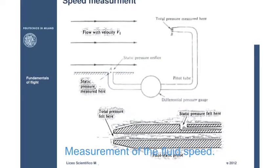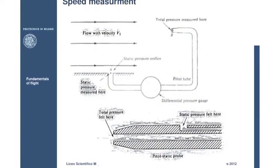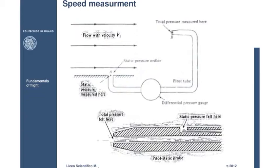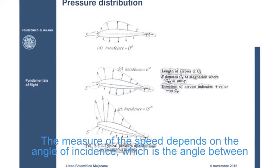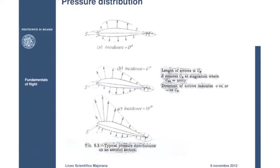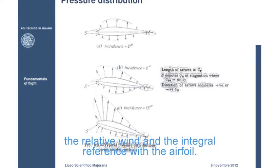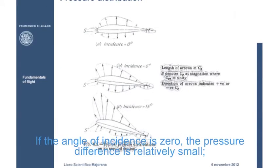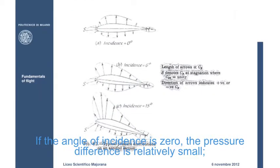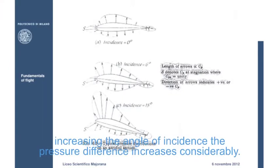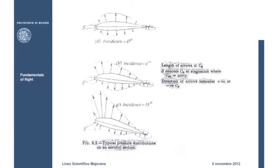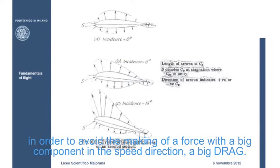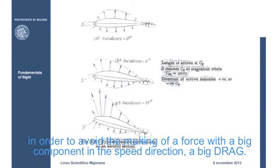Measures of the fluid's speed. The measure of the speed depends on the angle of incidence, which is the angle between the relative wind and the integral reference with the airfoil. The cord is a segment that joins the leading edge with the trailing edge. If the angle of incidence is zero, the pressure difference is relatively small. Increasing the angle of incidence, the pressure difference increases considerably. So, it is important to estimate the airfoil's shape, in order to avoid the making of a force with a big component in the speed's direction, that is, a big drag.